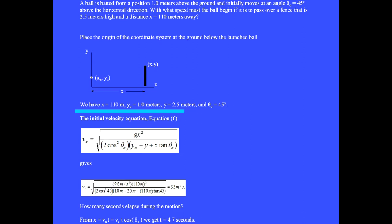We put the origin of the coordinate system at the ground below the launched ball. We have x equal 110 meters, the initial height y₀ equal 1 meter, the final height y equal 2.5 meters, and θ₀ equal 45 degrees.